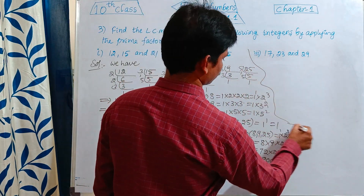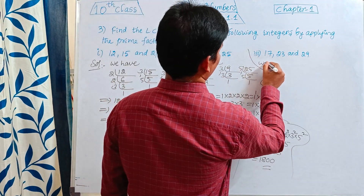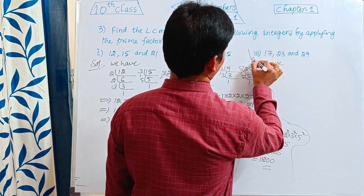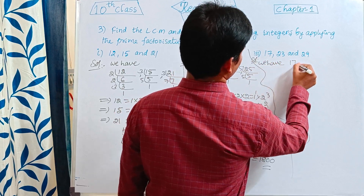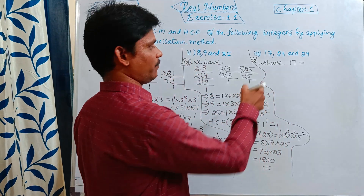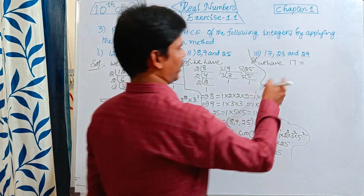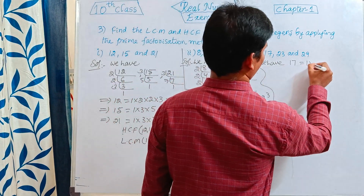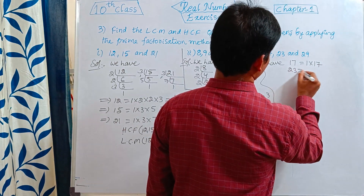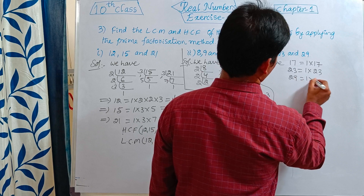See this one. We have 17, 23, and 29. These are prime numbers. So 17 has prime factors 1 and itself, 23 has prime factors 1 and itself, and 29 has prime factors 1 and itself. So: 17 = 1 × 17, 23 = 1 × 23, 29 = 1 × 29.